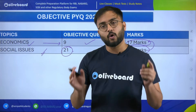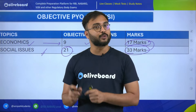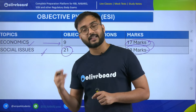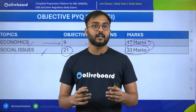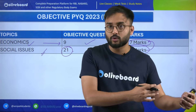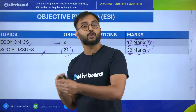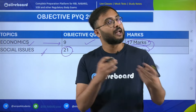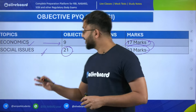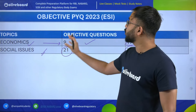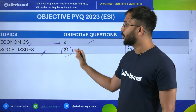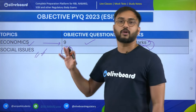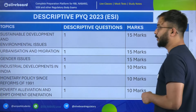Not only that — we also bring government scheme compilations taken by Lakshmi ma'am, government scheme individual sessions taken by Pooja ma'am, PIB sessions taken by Lakshmi ma'am, and daily current affairs taken by Pooja ma'am. Considering this, you can score really very high in the objective part if your social issues — that is social sector schemes, overall government schemes, and PIB news — are very clear.